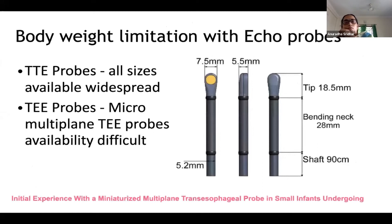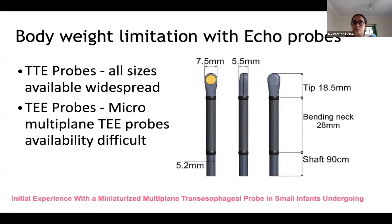There is a body weight limitation with trans esophageal echo probes. Micro multiplane TEE probes that can be used in small infants — as small as 2.5 to 3 kilos — are not easily available. So TEE probes are available mainly for older pediatric and adult patients, whereas trans thoracic probes are available for all sizes and body weights and are widely available.